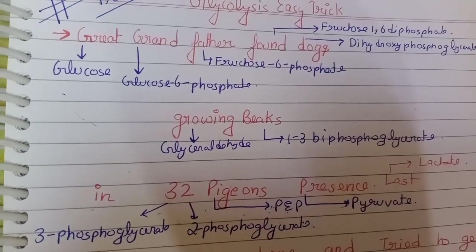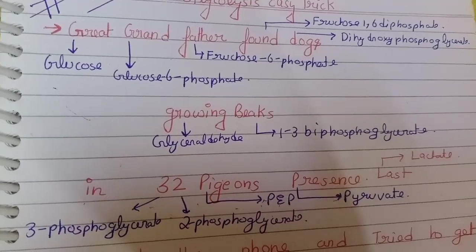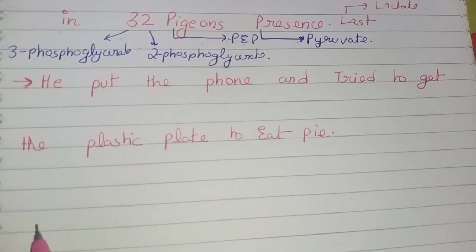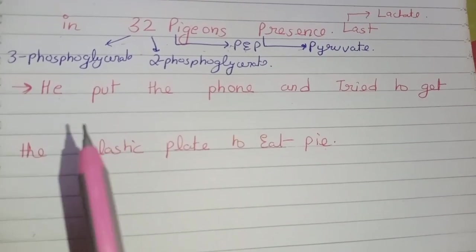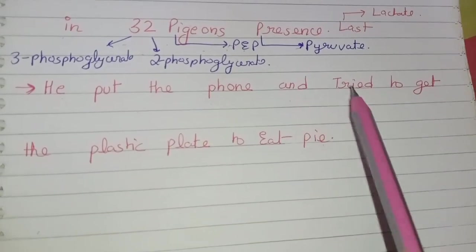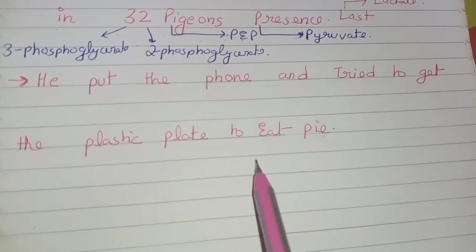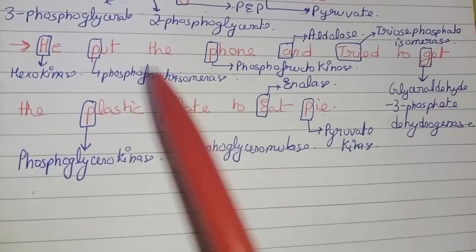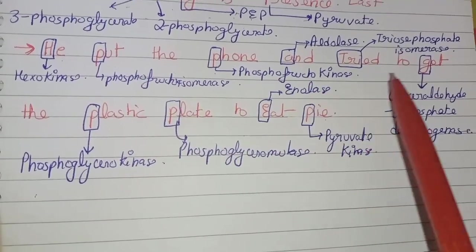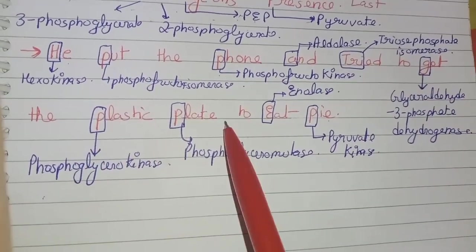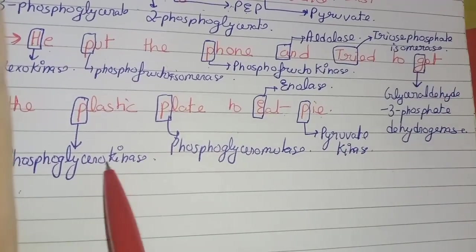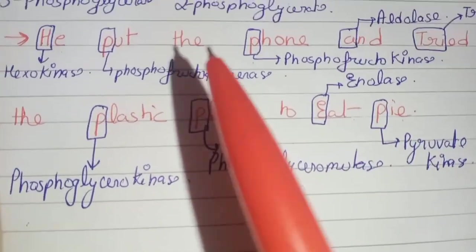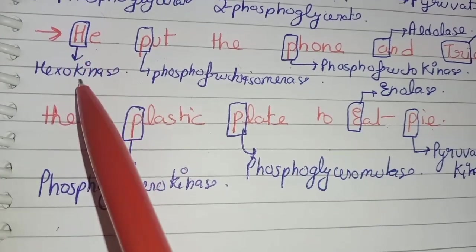Trick 2 gives us the various enzymes that take part in glycolysis. The trick is: 'He put the phone and try to get the plastic plate to eat pie.' As you can see in the technique, each word corresponds to an enzyme used in the various steps of glycolysis.